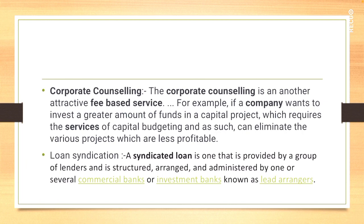Next comes loan syndication. A syndicated loan is one provided by a group of lenders and is structured, arranged, and administered by one or several commercial or investment banks known as lead arrangers. Loan syndication is an arrangement where a group of around 10 to 30 banks come together to provide funds for a single loan, with one bank acting as the lead manager. A single bank cannot give a huge loan, so banks join together and form a syndicate, similar to consortium financing.